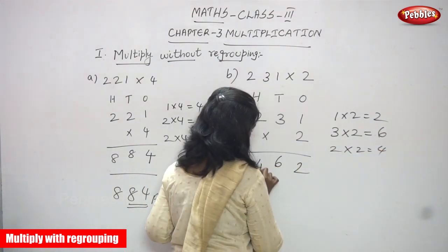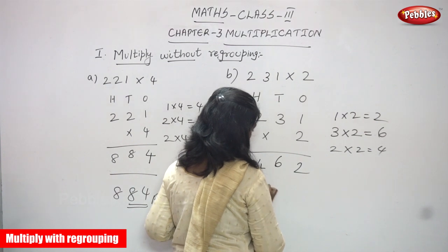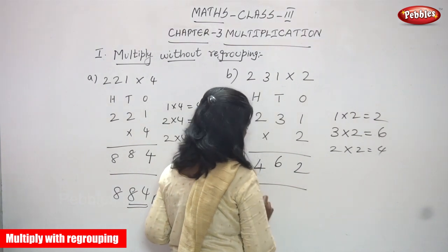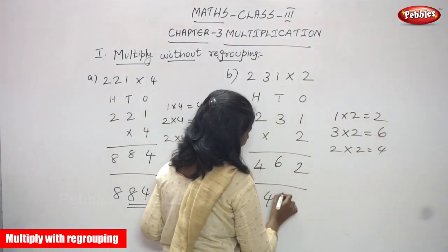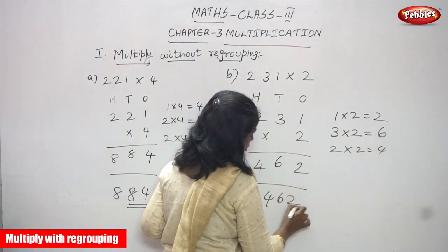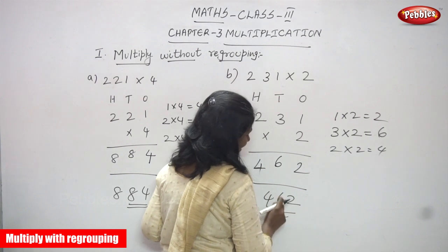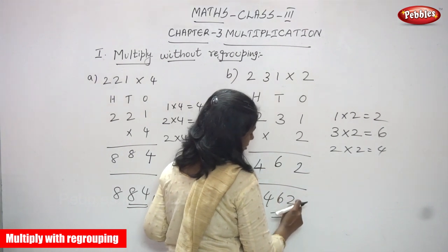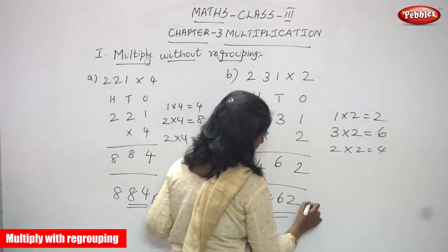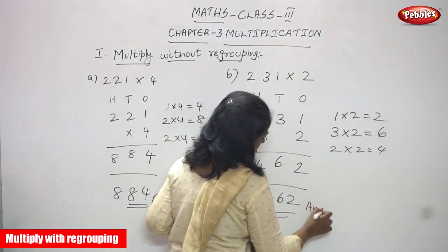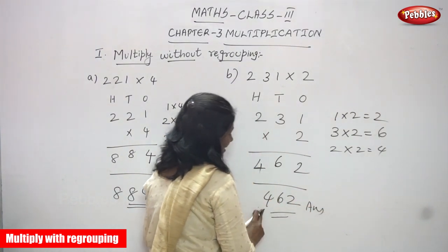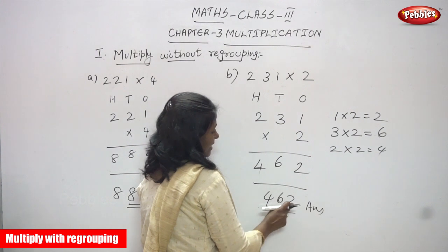The answer is 462 — that means four hundreds, six tens, and two ones.